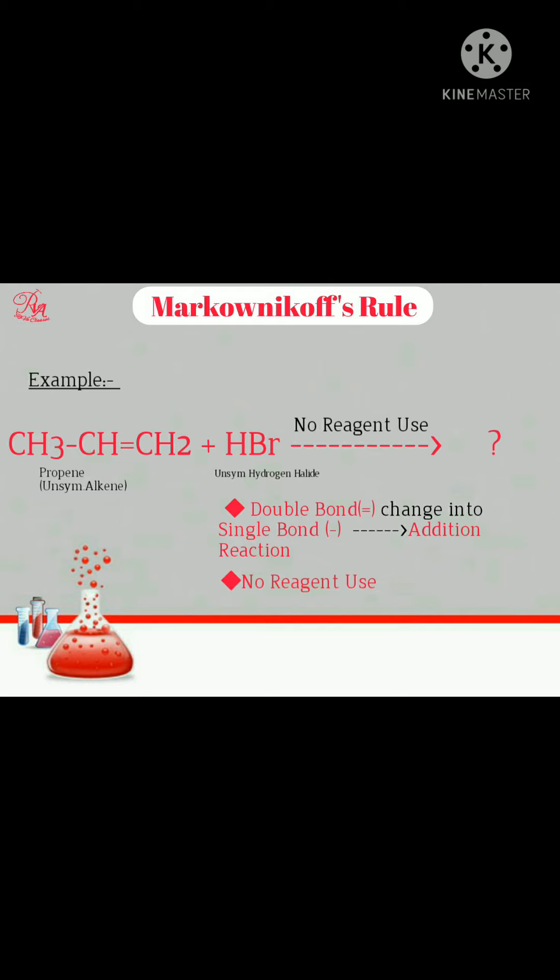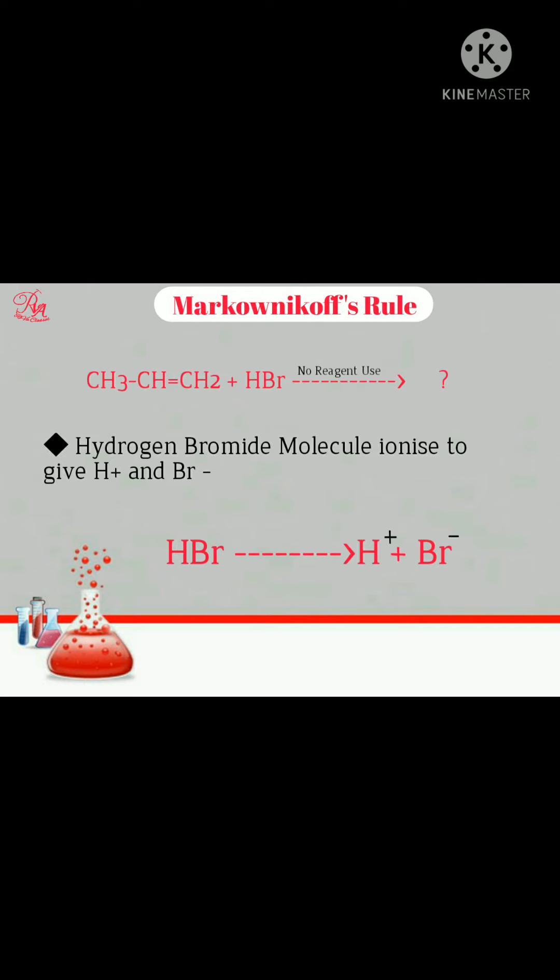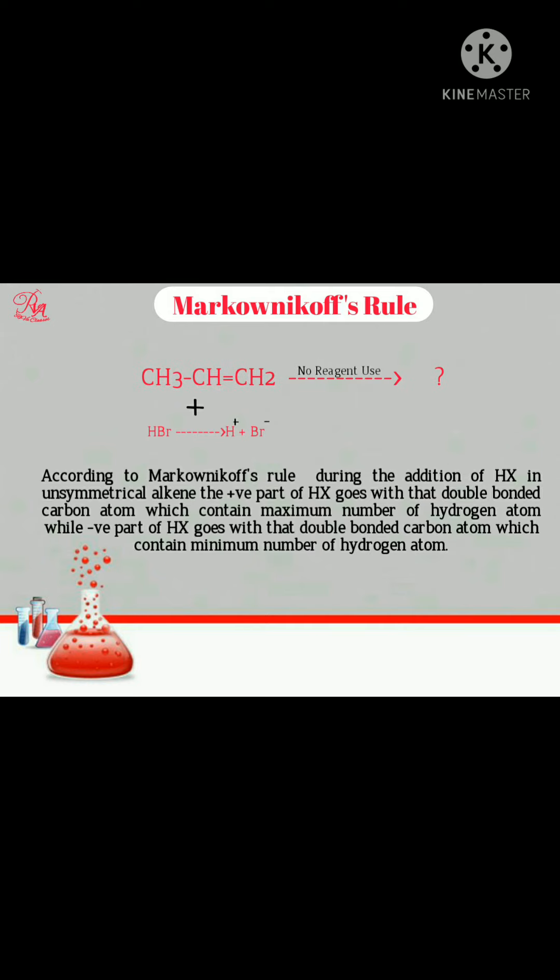By applying this rule, when propene reacts with HBr, HBr breaks into H positive and Br negative. According to Markownikoff's rule, during the addition of HX (hydrogen halide) to unsymmetrical alkyne, the positive part of hydrogen halide goes to the double bonded carbon atom which contains the maximum number of hydrogen atoms, while the negative part goes to the carbon atom which contains the minimum number of hydrogen atoms.